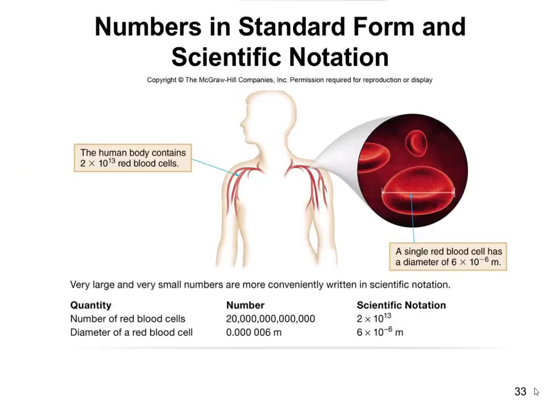For those numbers we just looked at, you really don't need scientific notation — it's not that hard to write 2,500 or 0.036. However, if we were to try to report the number of red blood cells that we have, this is the number shown here: it's 2 times 10 to the 13.